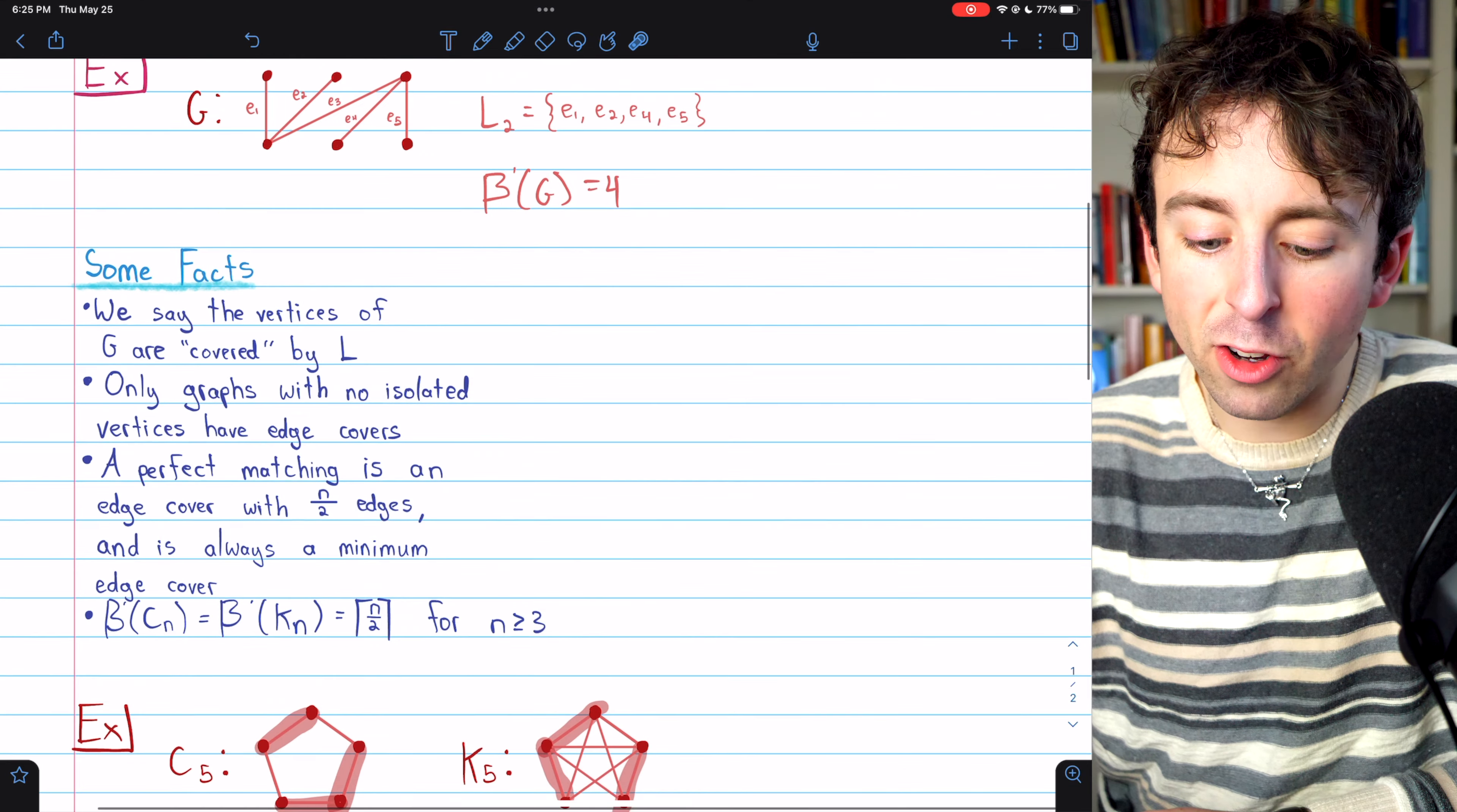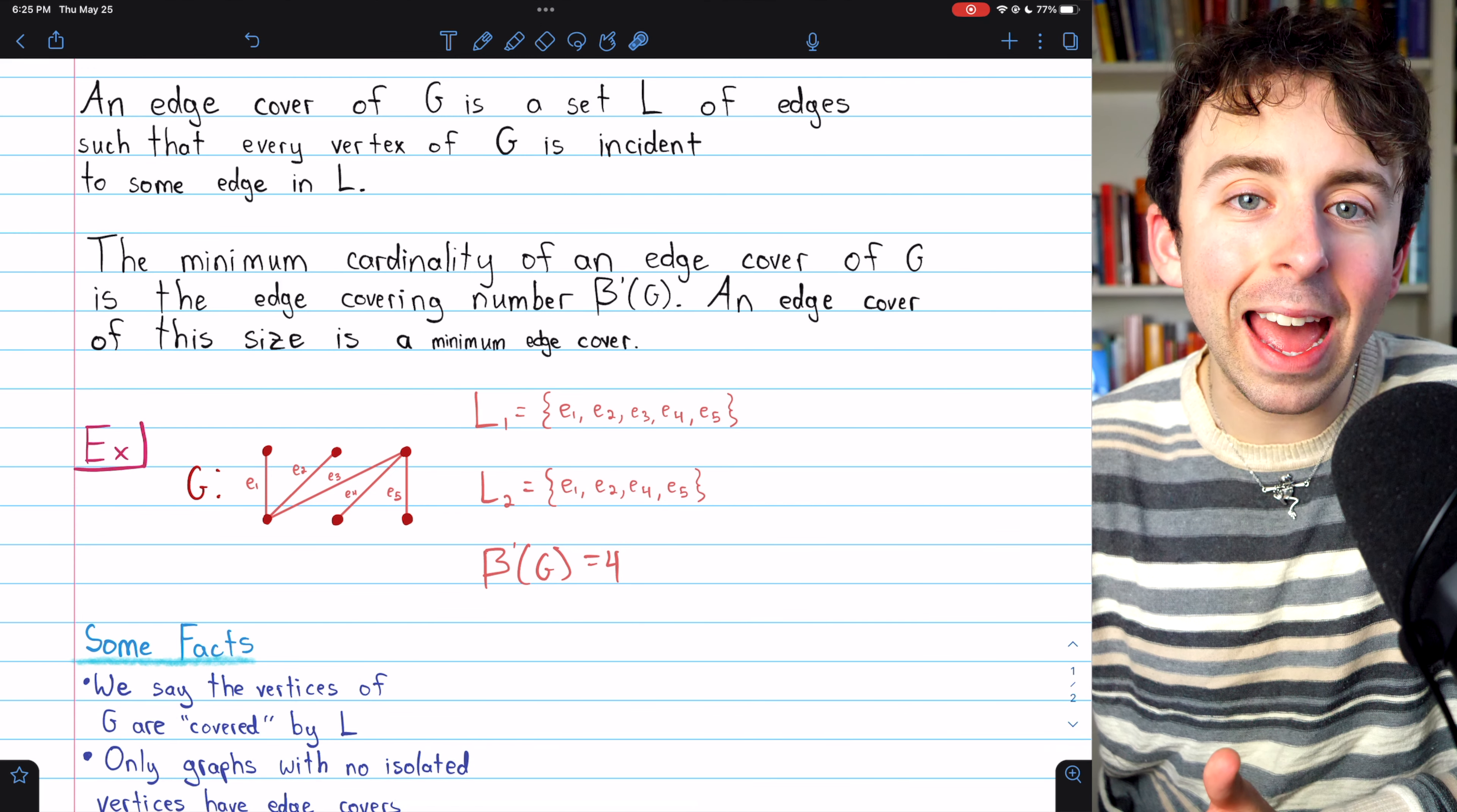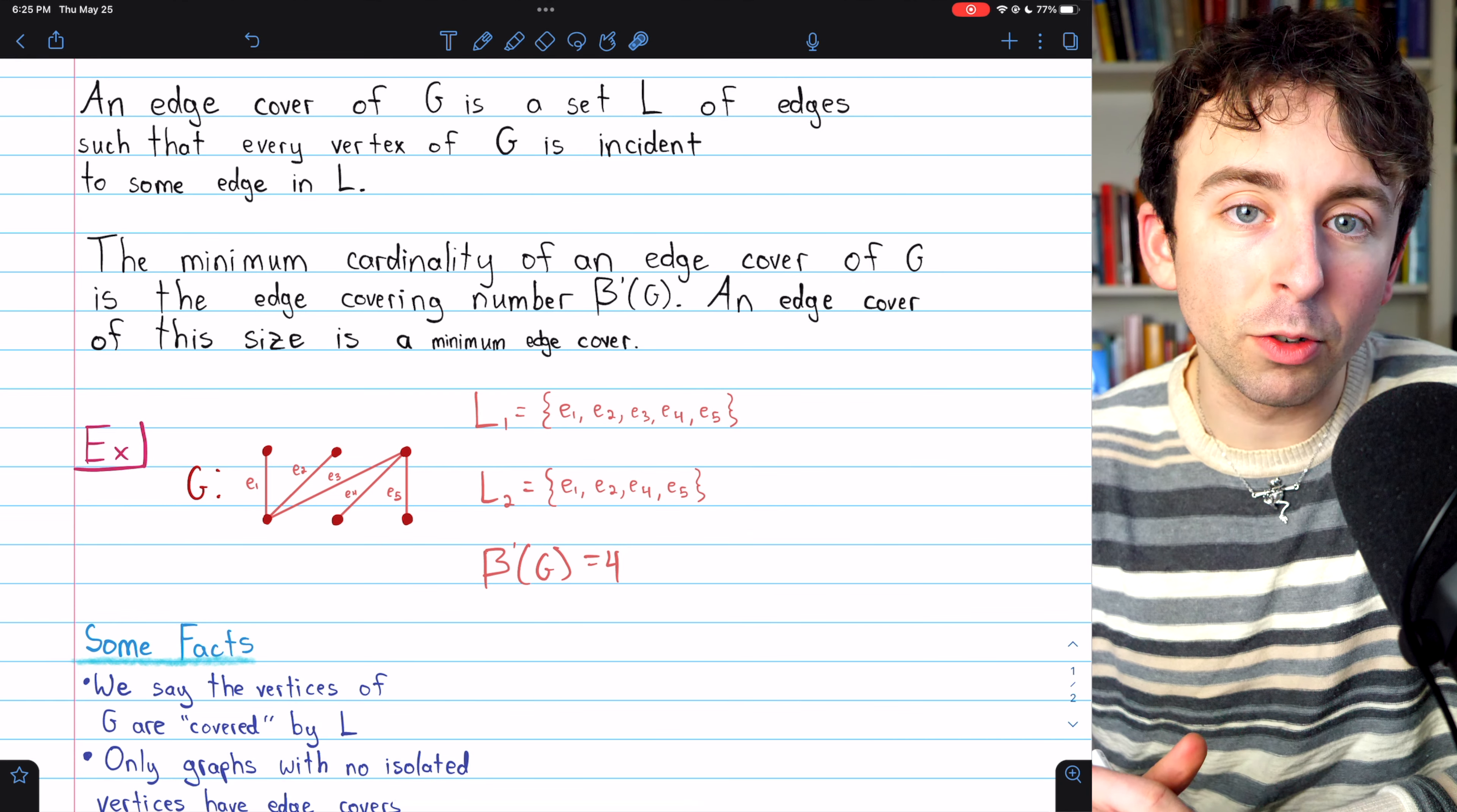And that is what an edge cover is. It's just a set of edges of a graph such that every vertex of the graph is incident to some edge in the cover. Let me know in the comments if you have any questions. Check out my graph theory playlist for more. Link in the description.